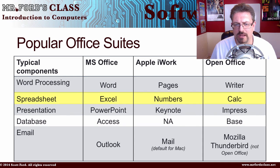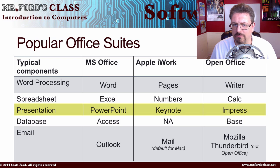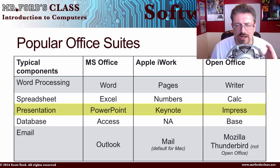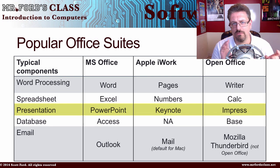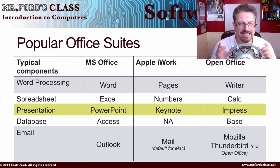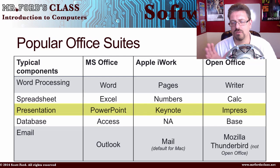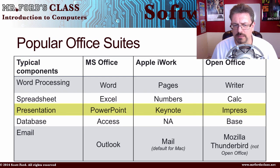The spreadsheet — Microsoft Office calls it Excel, Apple iWork calls it Numbers, OpenOffice calls it Calc. Presentation software: we're familiar with PowerPoint from Microsoft Office. Apple iWork has Keynote, which is incredibly powerful with a lot of features, though there's a learning curve. If you're on a Mac, it's worth checking out. OpenOffice has Impress.